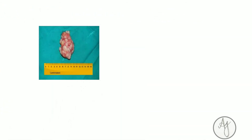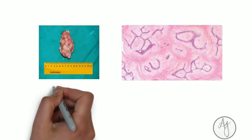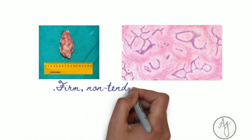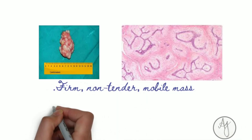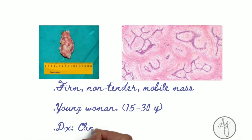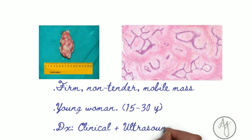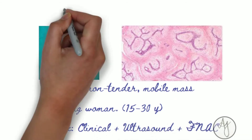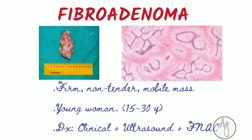If there is a firm, non-tender, mobile mass in the breast of a young woman around 15 to 30 years of age — also known as a breast mouse — it is usually a fibroadenoma. The diagnosis is a combination of clinical examination, ultrasound, and FNAC.